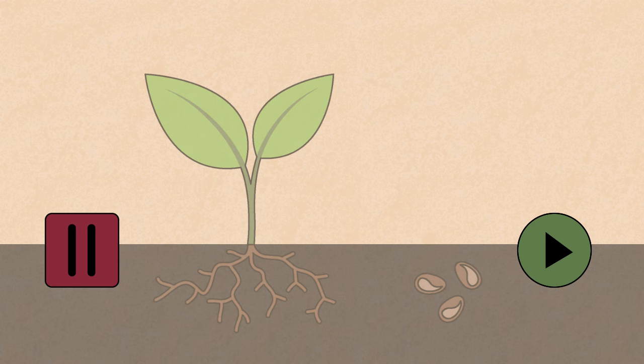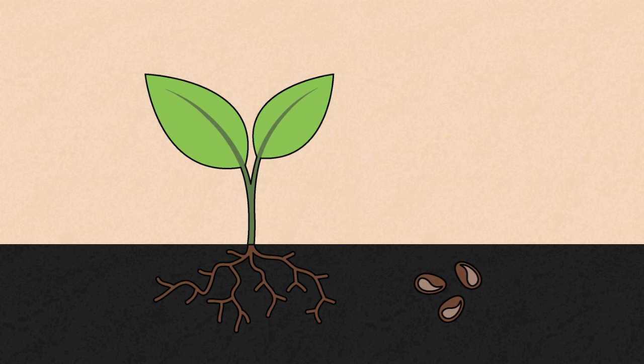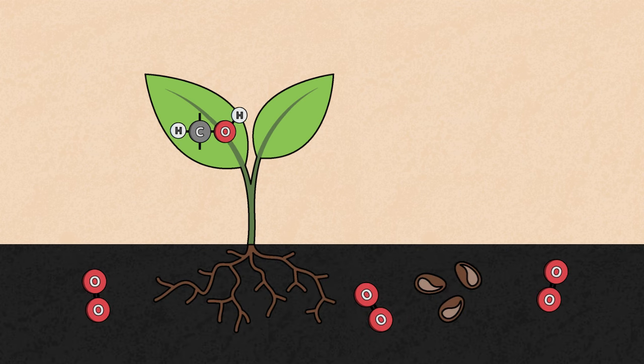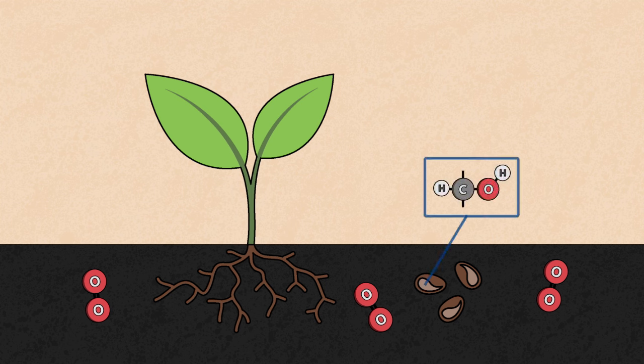Pause the video and think how roots and seeds get energy. The answer is that they need a constant supply of oxygen, which means that the soil must be full of air and not waterlogged. The roots get sugars sent down from the leaves, and seeds have enough of their own fuel supply until they put out green shoots and start making more.